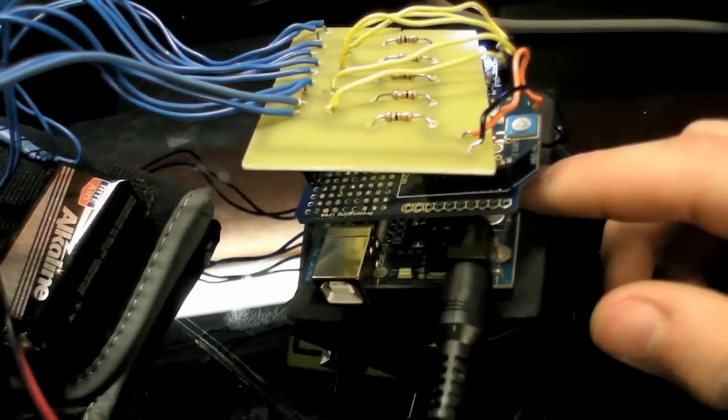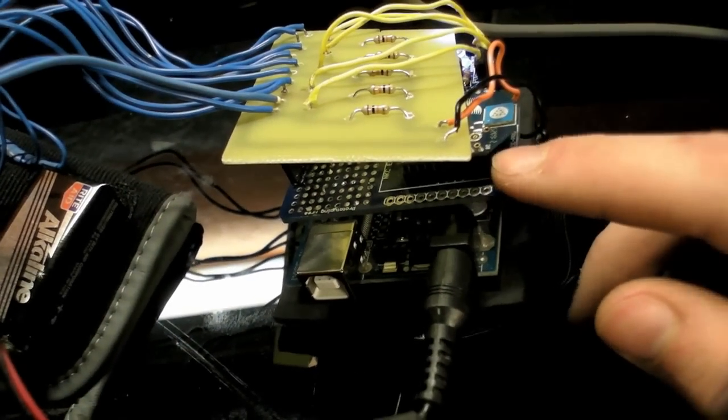This is the control glove. This has an Arduino and an XB shield with an XB radio.